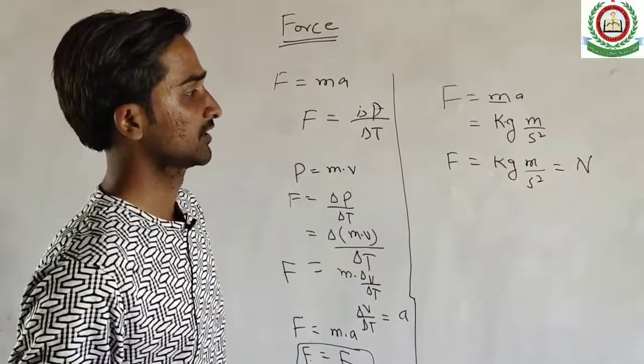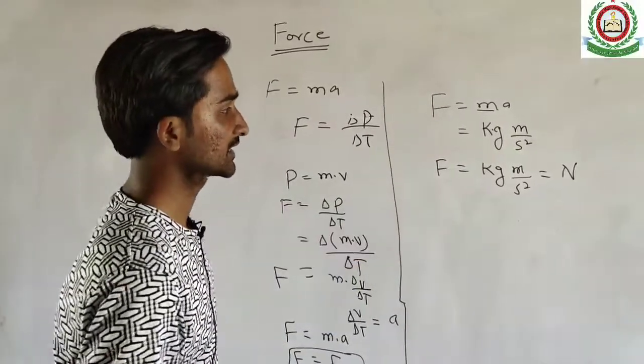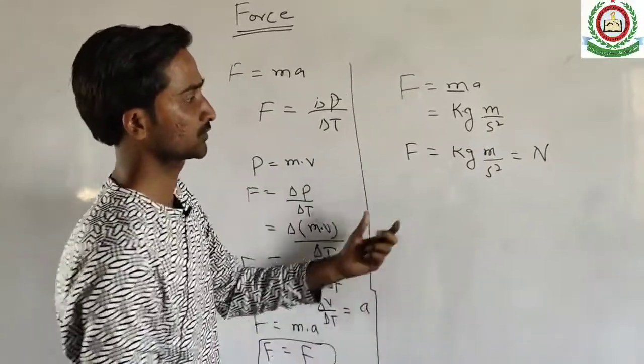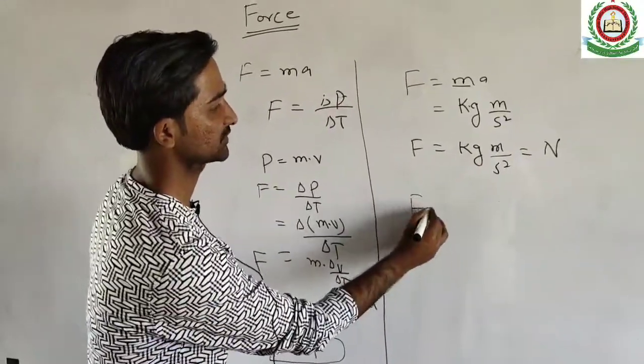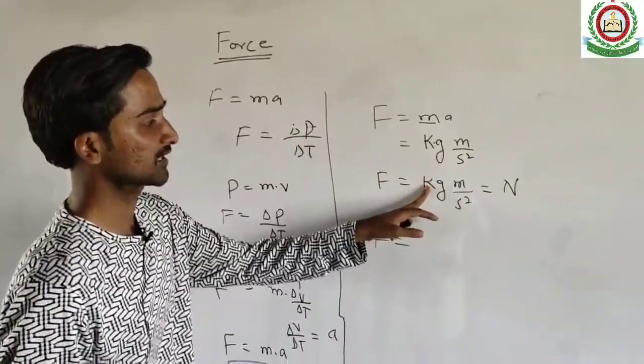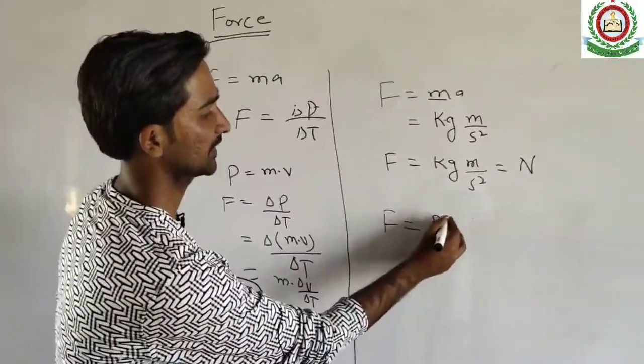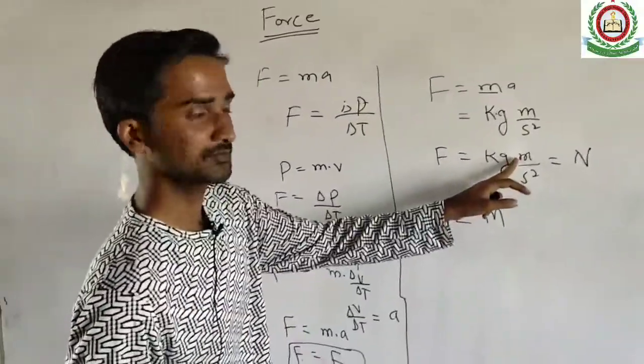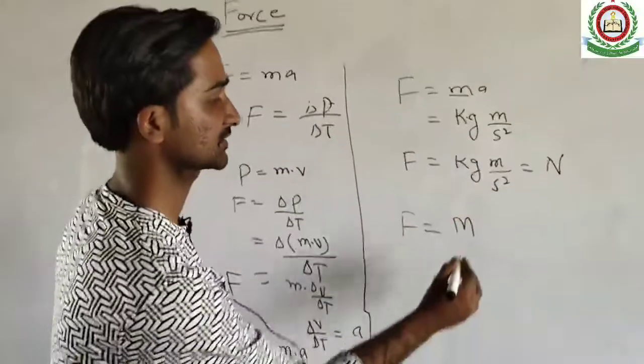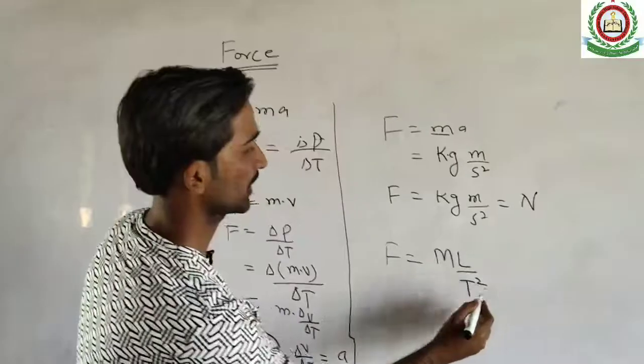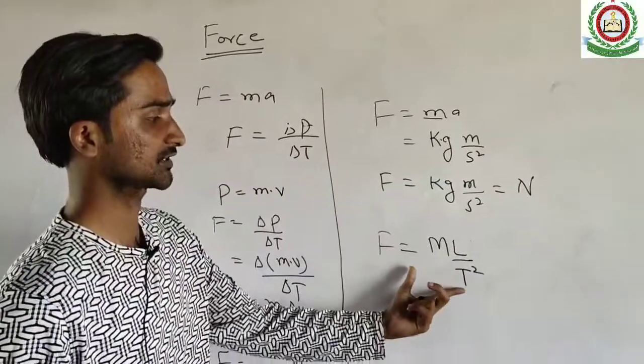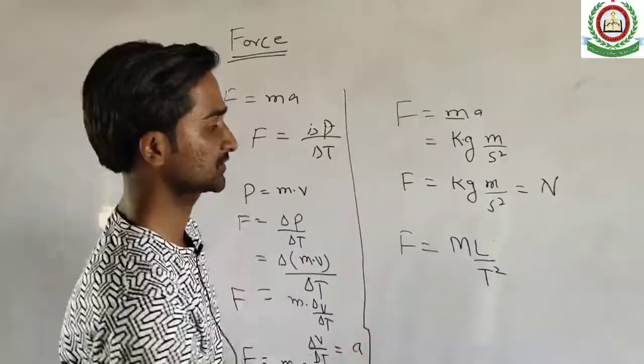If the dimension of force: the unit gives us the dimension. F is equal to kilogram of mass, capital M, times meter, the length dimension capital L, divided by T square.